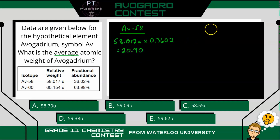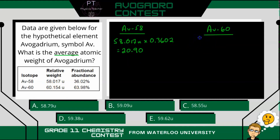Now let's do the same thing for Av60. We take the relative weight, 60.154 atomic units, and multiply that by the percentage, 0.6398. When we do that, we get 38.49.